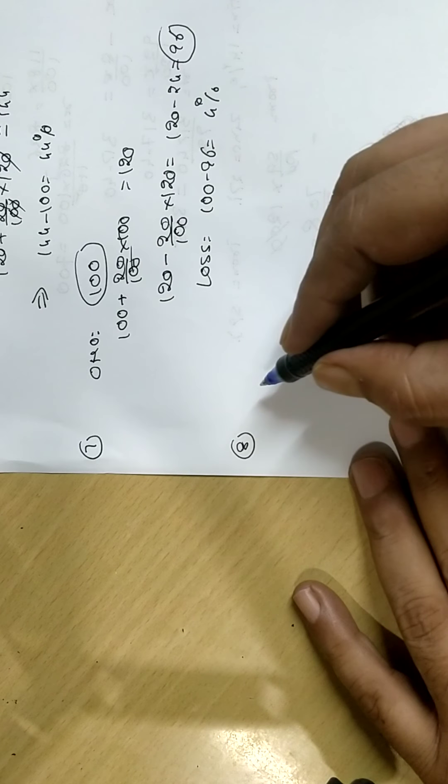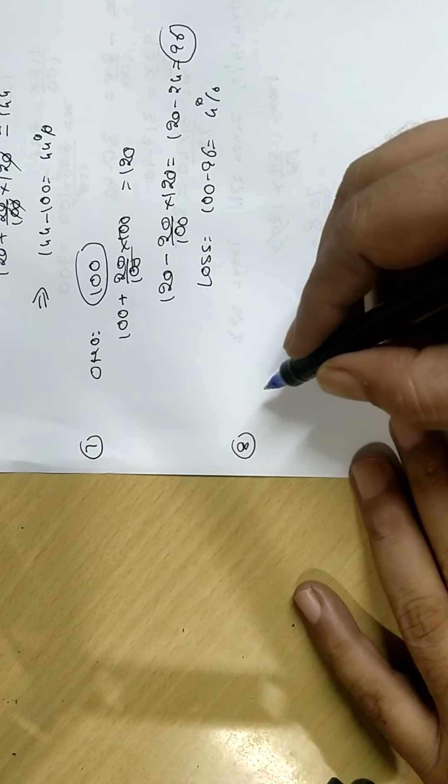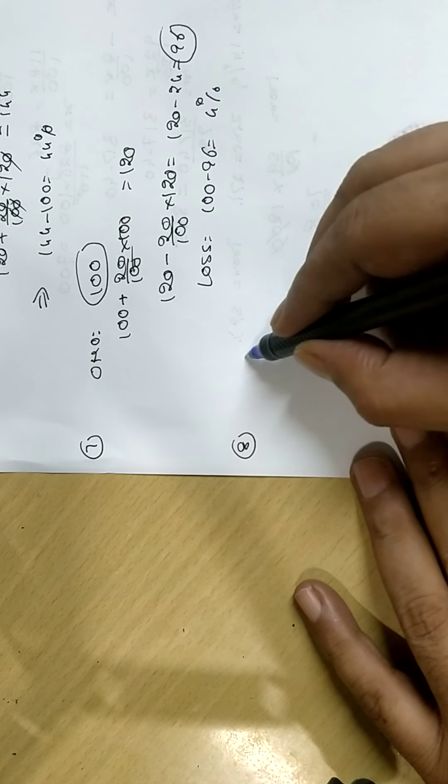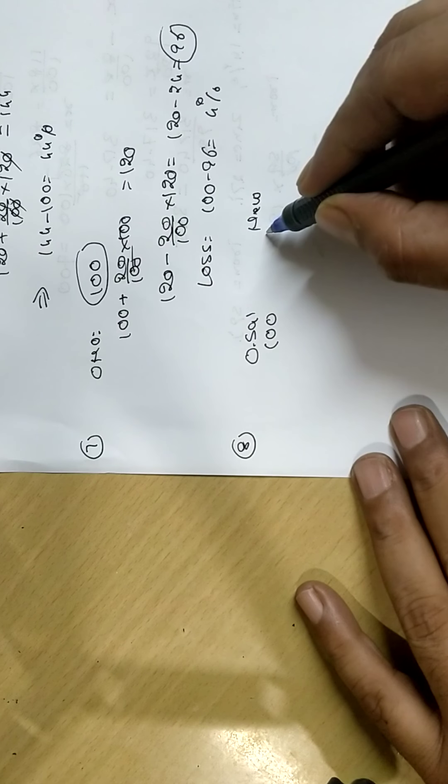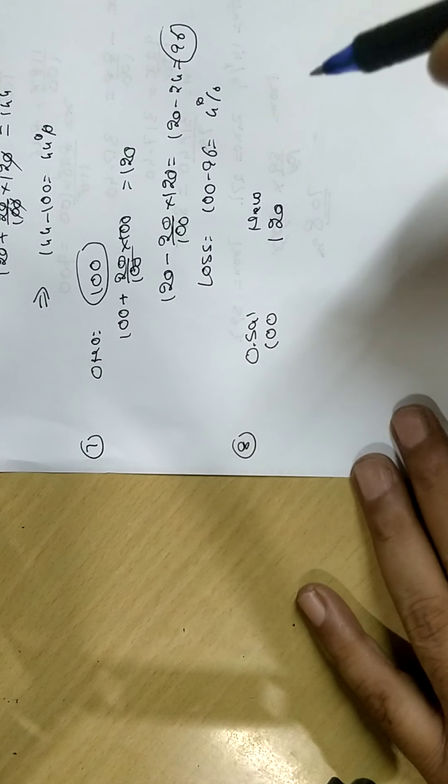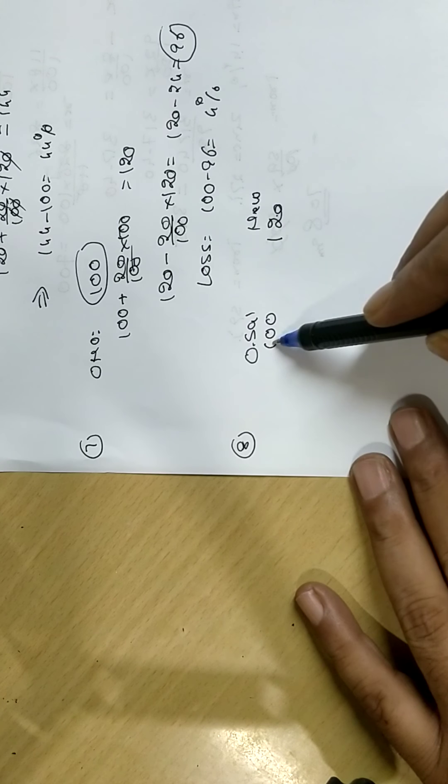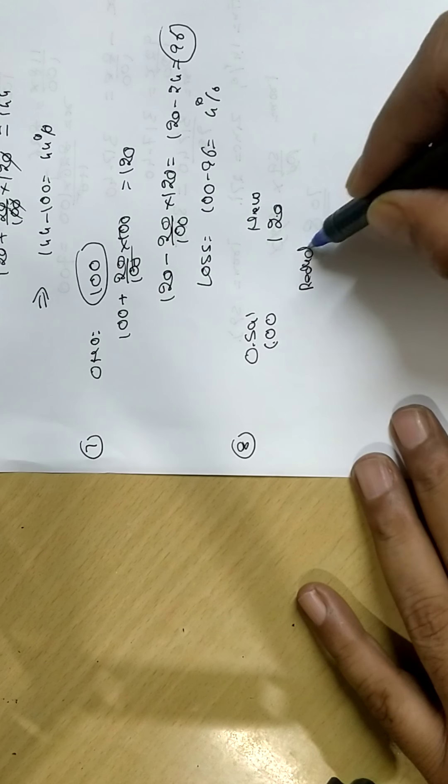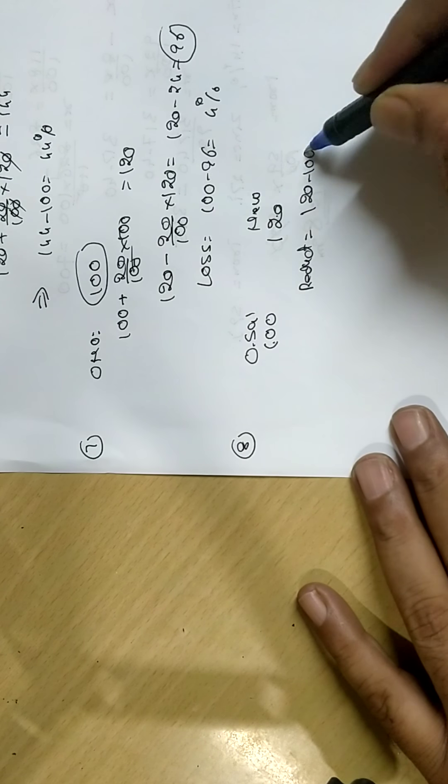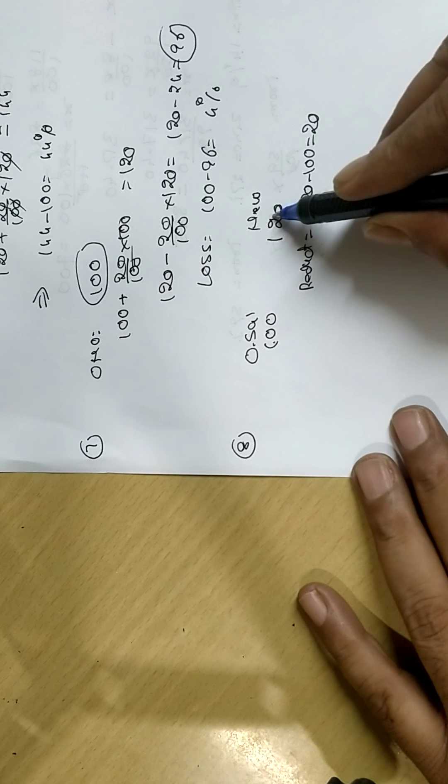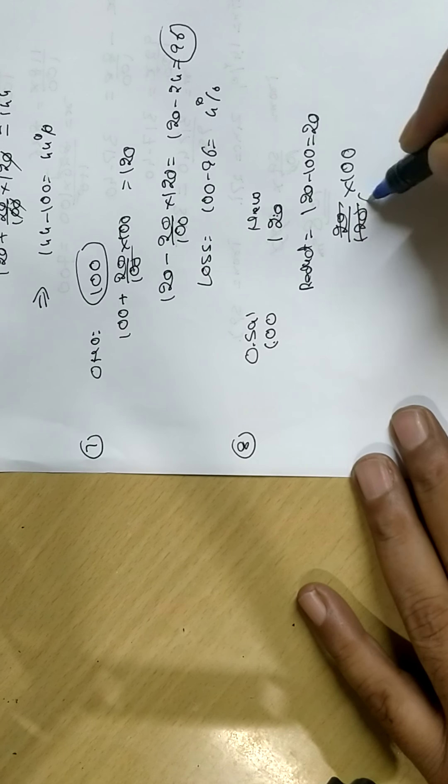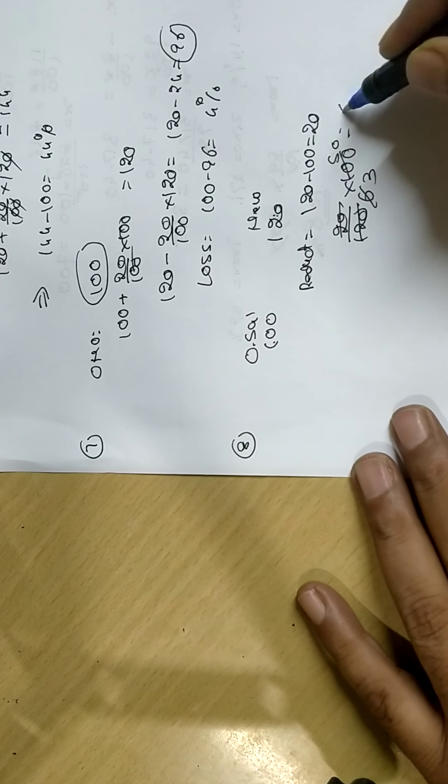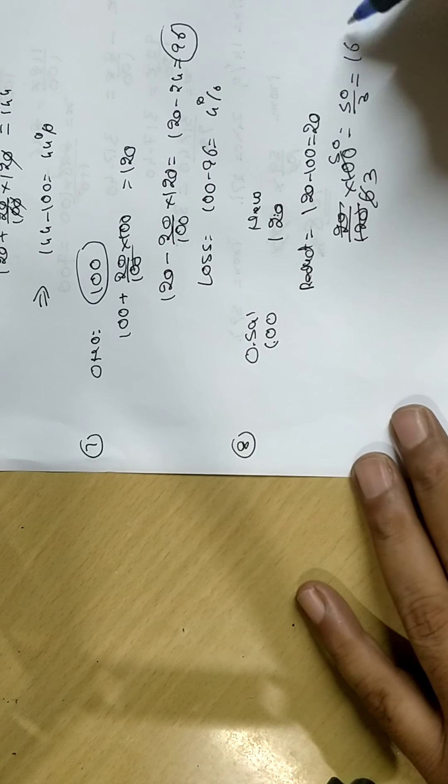Eight. Salary of officer increased by 20%. By what percent should the new salary reduce? Original salary 100, new salary increased by 20%, becomes 120. Reduction: 120 minus 100, that is 20. So, 20 out of 120 times 100, that is 50 upon 3, that is 16 and 2/3%. Video one end, thanks.